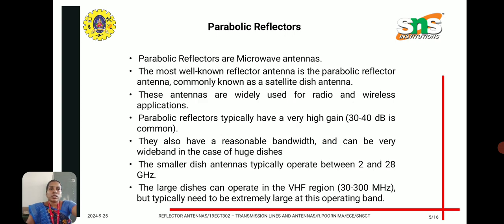Parabolic reflectors are microwave antennas. The most well-known reflector antenna is the parabolic reflector, commonly known as the satellite dish antenna. These antennas are widely used for radio and wireless applications. Parabolic reflectors typically have high gain, a reasonable bandwidth, and very wide band in the case of large dishes. Smaller dish antennas typically operate between 2 and 28 GHz, while large dishes can operate in the VHF region of 30 to 300 MHz, but typically need to be extremely large at this operating band.